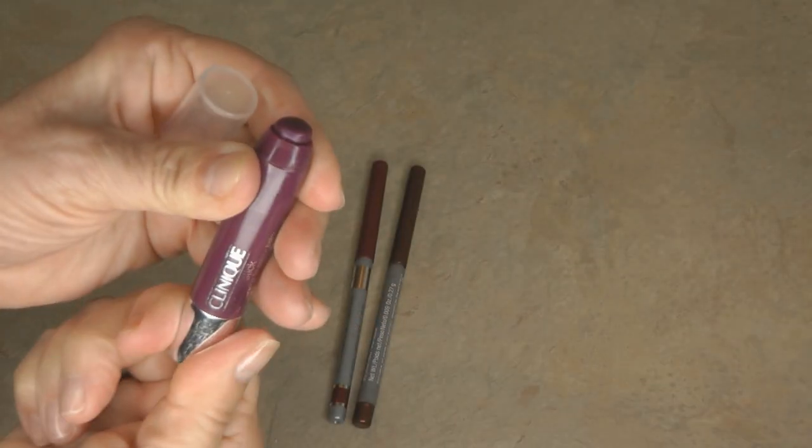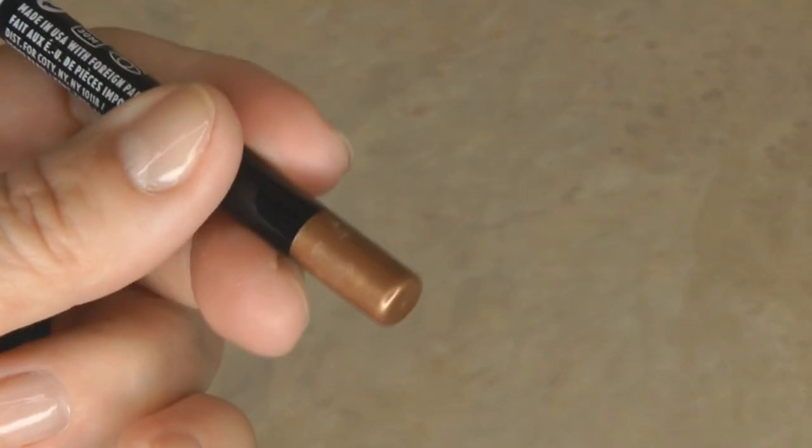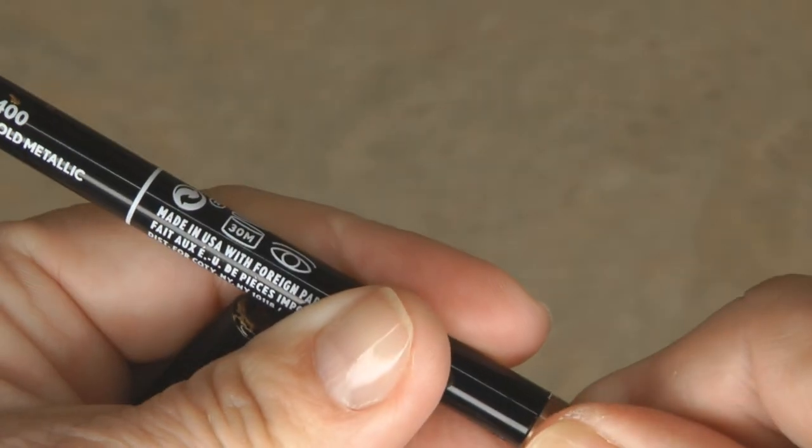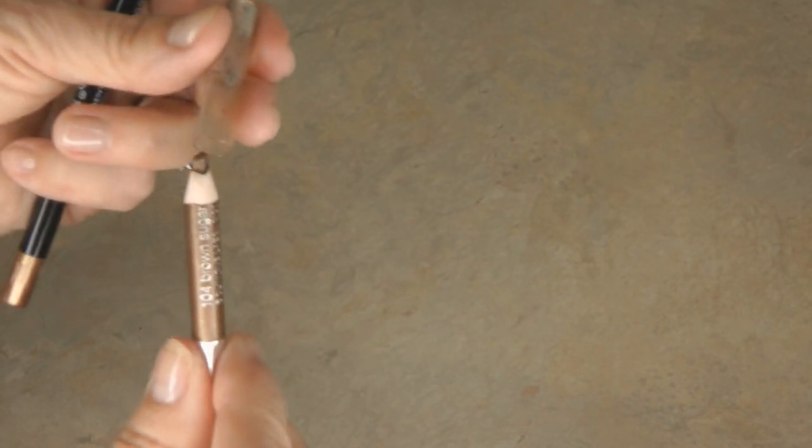I have other kinds of eyeliners and lip liners that twist up and down, but this one doesn't seem to do it. I tried pulling off the ends, twisting it, but it doesn't work. It doesn't look like the type that you would sharpen.